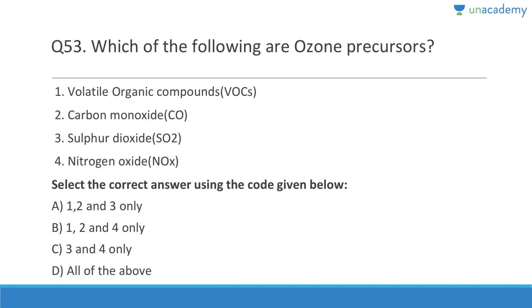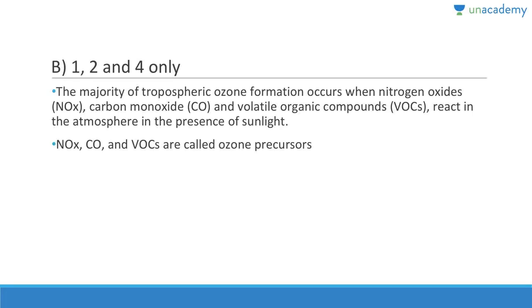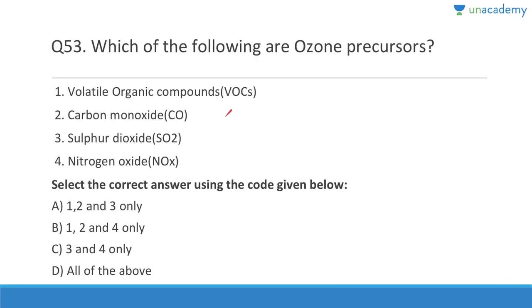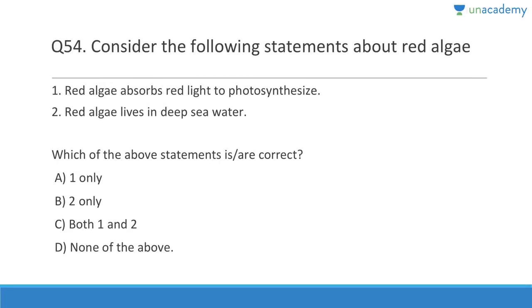Question 53: Which of the following are ozone precursors? Ozone in the stratosphere is good — it saves us from harmful ultraviolet rays. But ozone in the troposphere is a pollutant. The ozone precursors are NOx, carbon monoxide, and VOCs. The answer is 1, 2, and 4. Majority of tropospheric ozone formation occurs when nitrogen oxides, carbon monoxide, and volatile organic compounds react in the presence of sunlight. Sulfur dioxide is not an ozone precursor.